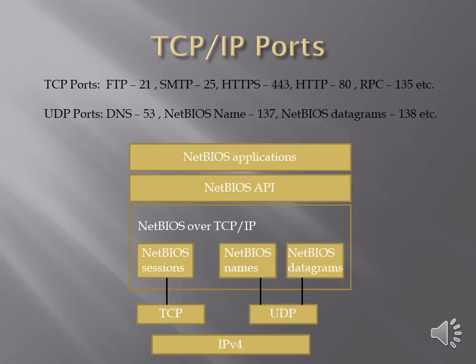TCP IP ports are ports used for transferring data from one device to another over the network. They are of two types: TCP ports and UDP ports. TCP ports are connection-oriented, and UDP ports use a connectionless state. Examples of TCP ports include FTP, SMTP, HTTPS, HTTP, and RPC.